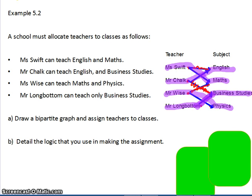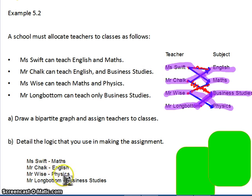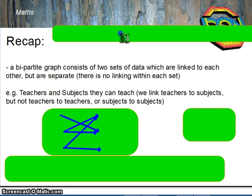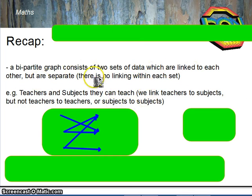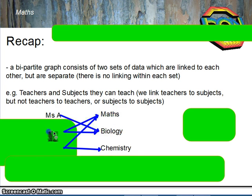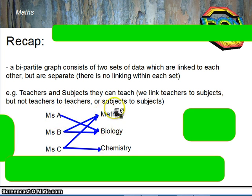So there's our final assignment. To recap: a bipartite graph consists of two sets of data which are linked to each other but are separate from one another — so there's no linking within each set. For example, teachers and subjects they can teach: we link teachers to subjects but we don't link teachers to teachers, and we don't link subjects to subjects.